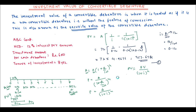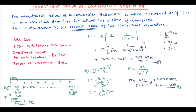The future value is Rs. 600, i = 12% (0.12), and N = 8. So PV = 600 / (1 + 0.12)^8 = 600 × 0.4039 = Rs. 242.33. This is Part 2. Total investment value = Part 1 + Part 2 = 357.67 + 242.33 = Rs. 600.